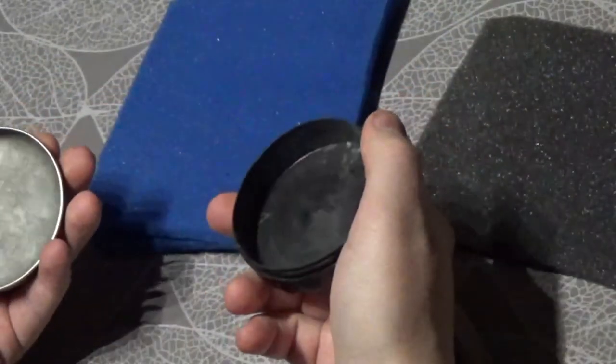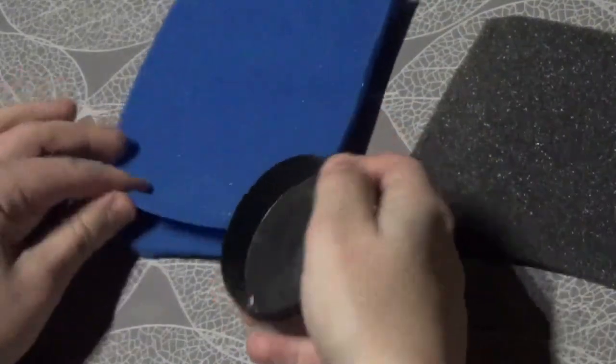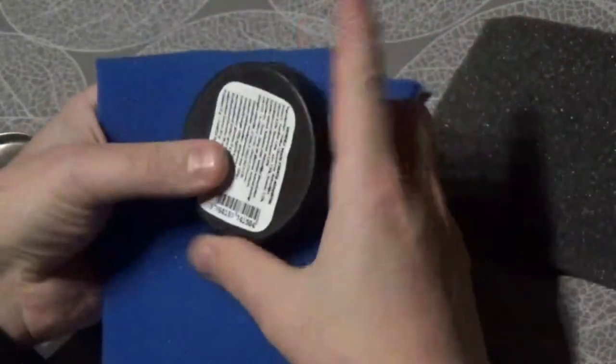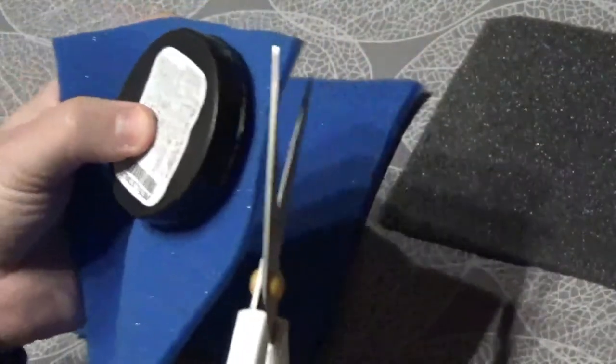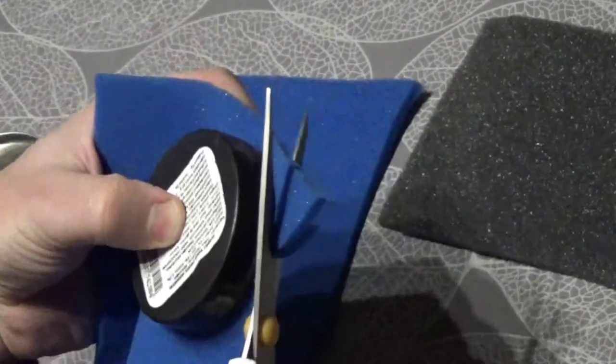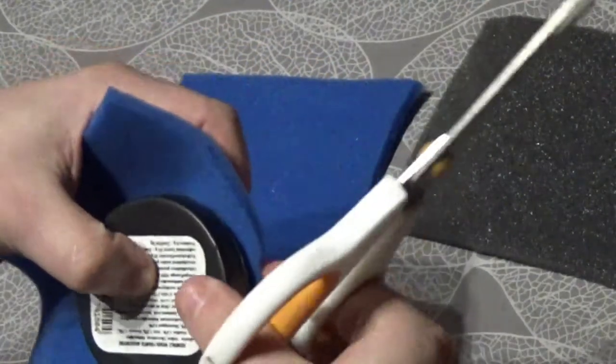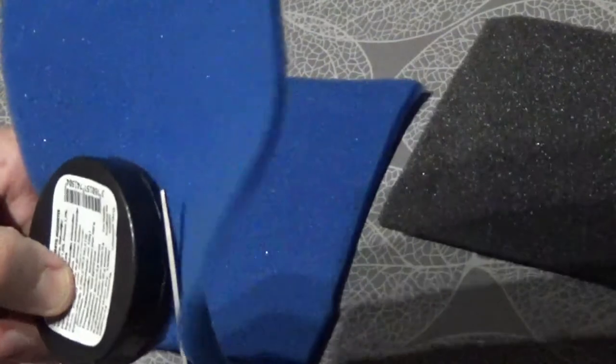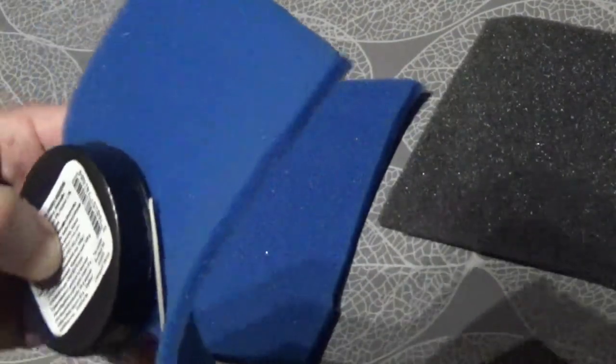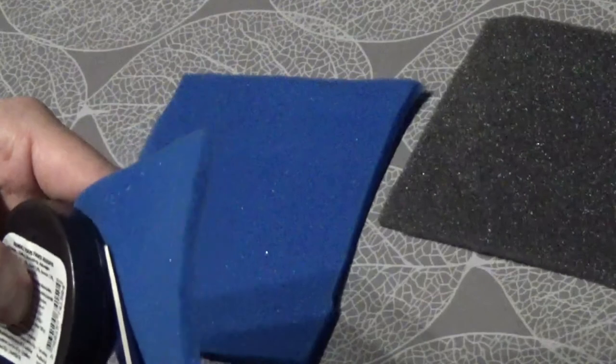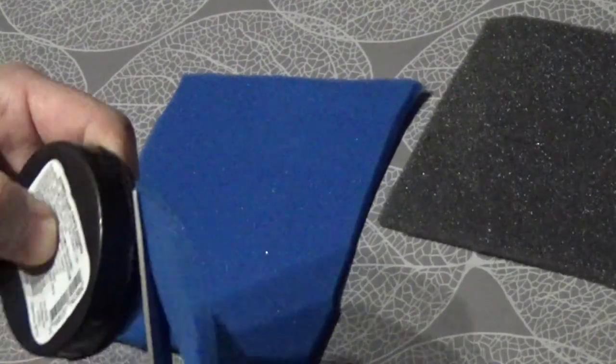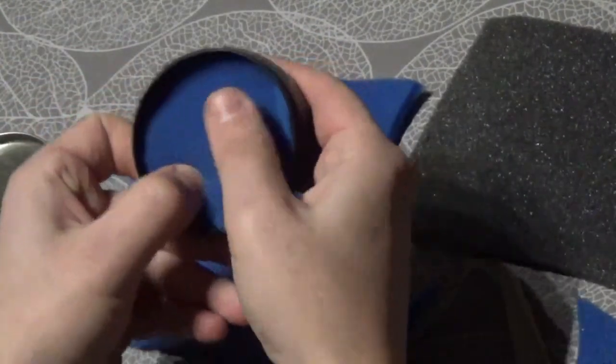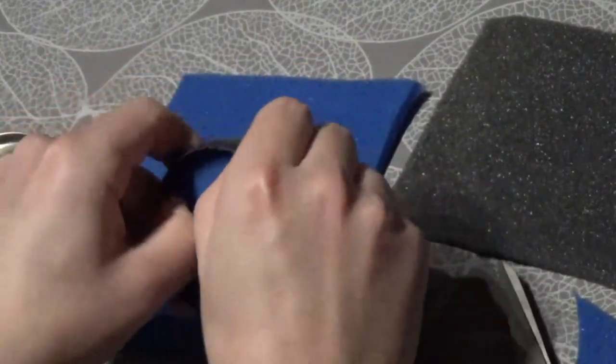Now we're going to do the same with the blue one. Just put it on the side like so and just go all around so that it fits the box.